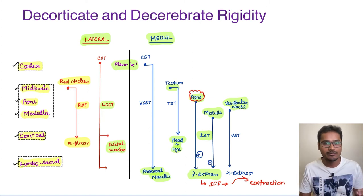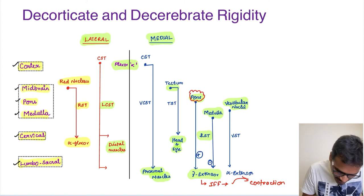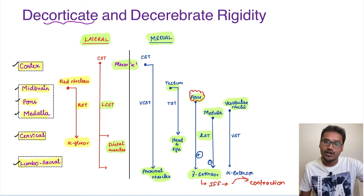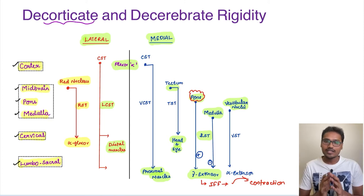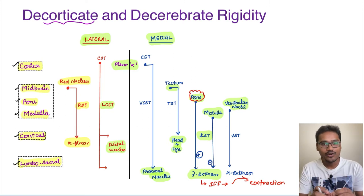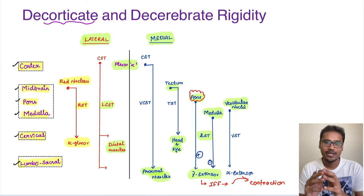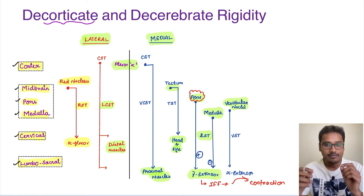Decerebrate and decorticate — we have one beautiful mnemonic to understand them very easily. Coming to the lesions: what is decorticate? As the term suggests, we are taking the cortex out of the picture. All these tracts are under the influence of the cortex. The cortex is like a boss sitting there and controlling all the tracts. If the cortex is intact and functioning properly, it keeps other tracts under control. But if the cortex is not functioning, all other tracts are going to perform their action very aggressively and vigorously.